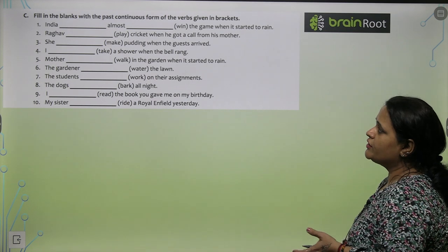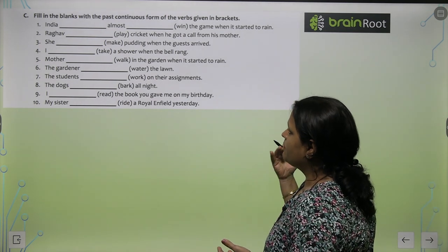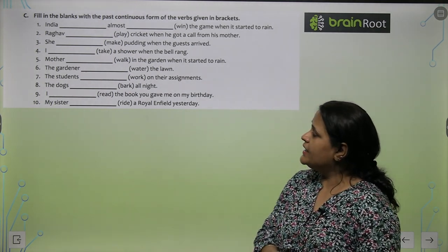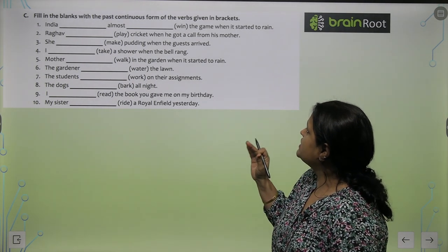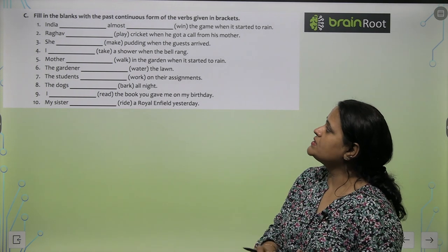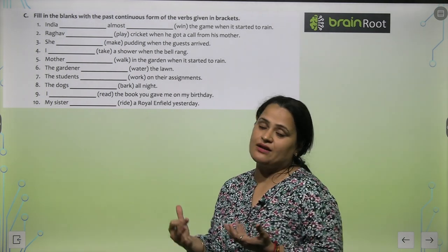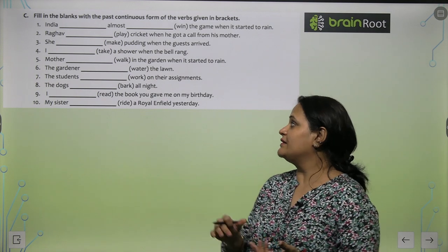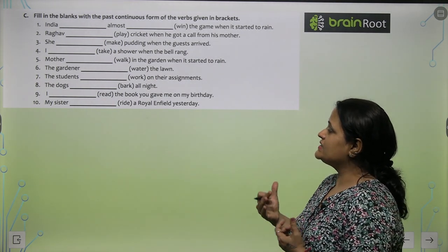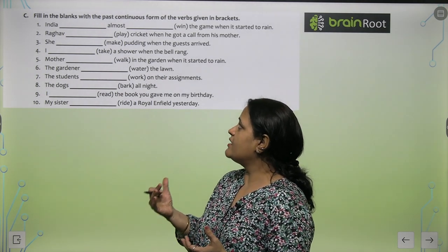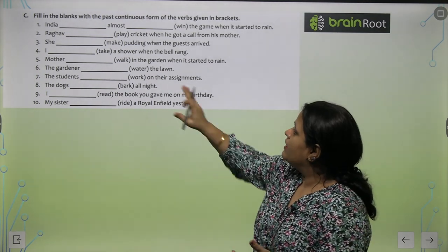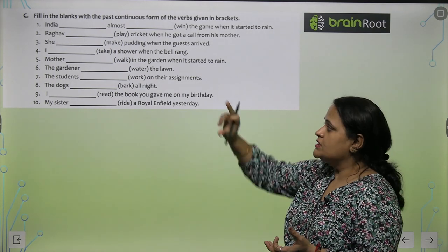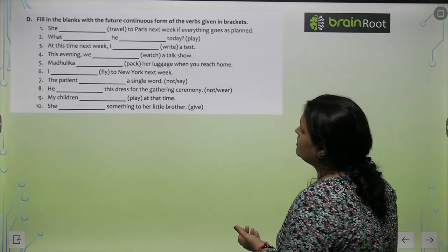Now, fill in the blanks with the past continuous form of the verbs given in brackets. 'India ___ almost winning the game when it started to rain' → 'India was almost winning the game when it started to rain.' 'Raghav was playing cricket when he got a call from his mother.' 'She was making pudding when the guests arrived.' 'I was taking a shower when the bell rang.' 'Mother was walking in the garden when it started to rain.' The remaining five you will do as homework.